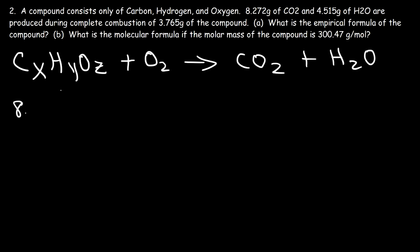Now to find the mass of oxygen, we take the total mass of the compound and subtract the masses of carbon and hydrogen. Taking 3.765 grams minus 2.257 grams of carbon minus 0.5052 grams of hydrogen gives 1.0028 grams of oxygen. Now that we have the mass of carbon, hydrogen, and oxygen within this compound, we can find the moles of each element and use that to find the empirical formula.